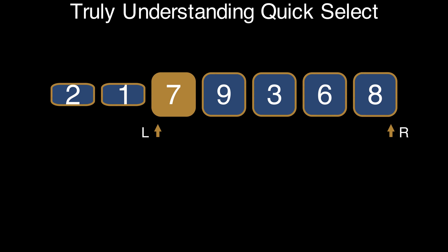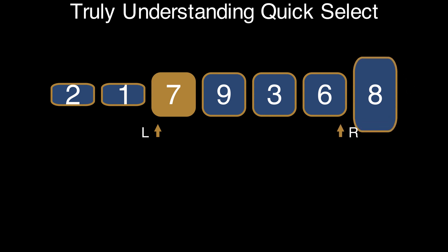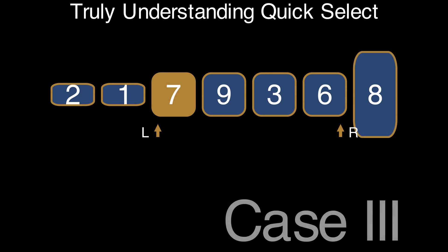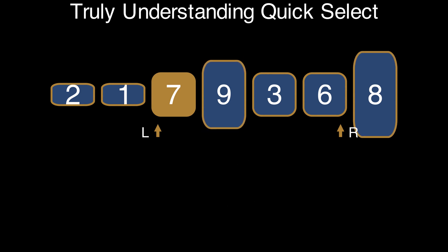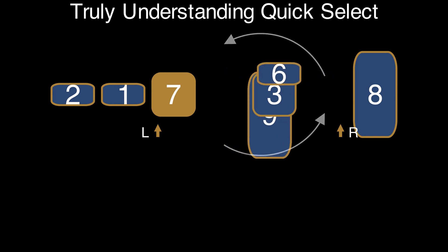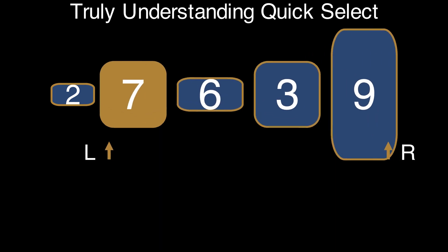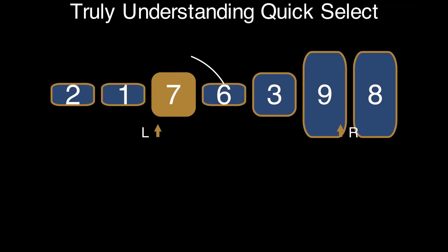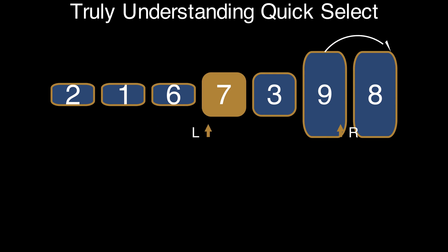In the second case, if the element at position R is greater than the pivot, we move it to the right of the L-R segment by simply decreasing R. This ensures that the elements to the right of R are greater than the pivot. In the third case, the element at position L plus 1 is necessarily greater than the pivot, because otherwise we would be in the first case. The element at position R is necessarily smaller than the pivot, because otherwise we would be in the second case. We swap these two elements. In the third case, the segment L-R does not decrease in size, but it enables the following steps to shrink the segment further.